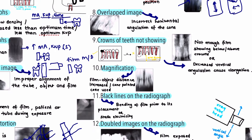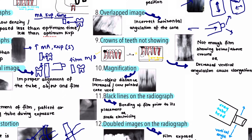The next projection error is the overlapped image, caused by incorrect horizontal angulation of the cone. Moving the x-ray tube head more mesially or distally leads to overlapping of the image. This can be avoided by using proper horizontal angulation — the ideal horizontal angulation is zero degrees, meaning the x-ray tube head should directly expose the film at the center.